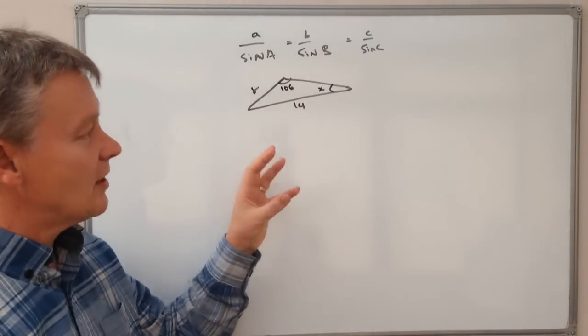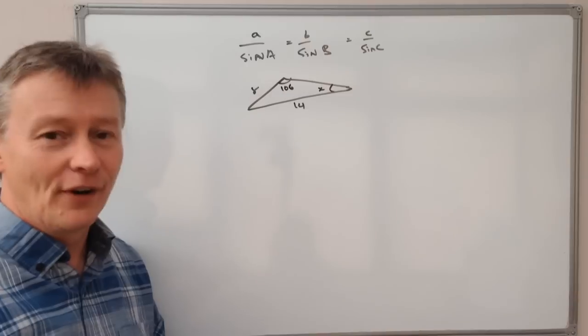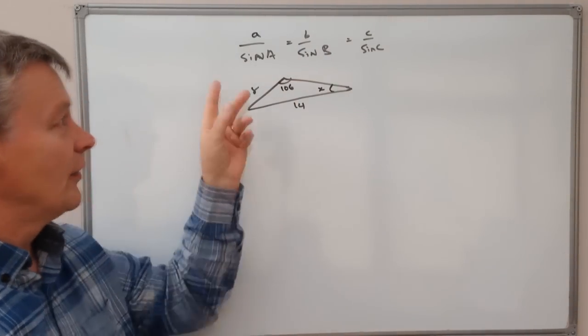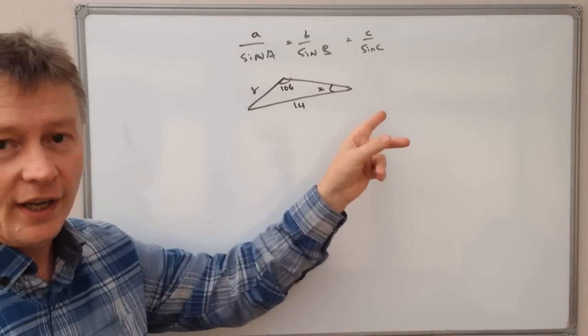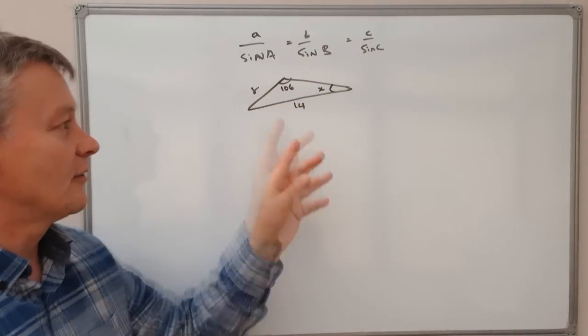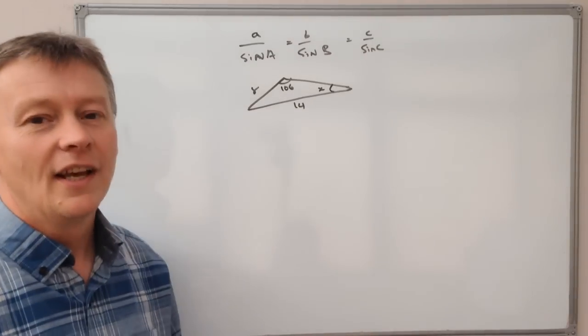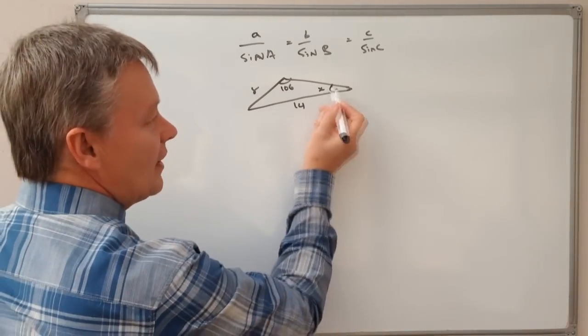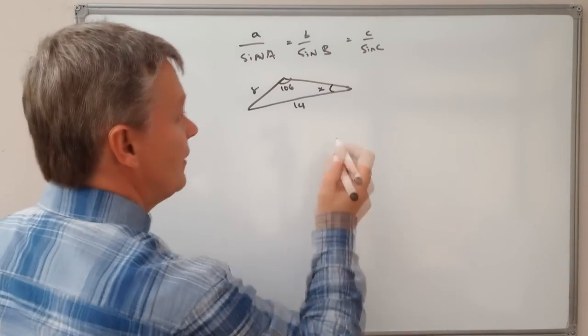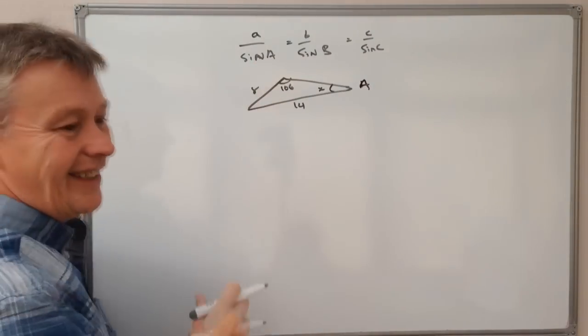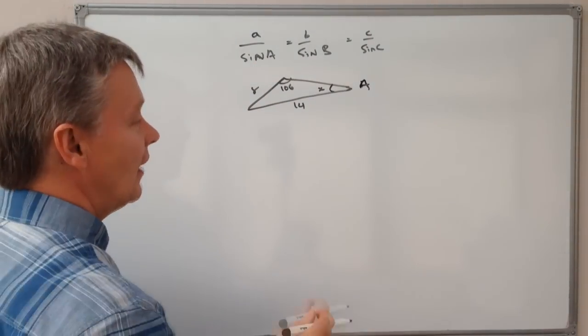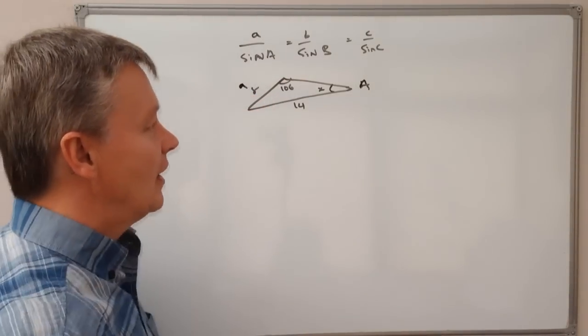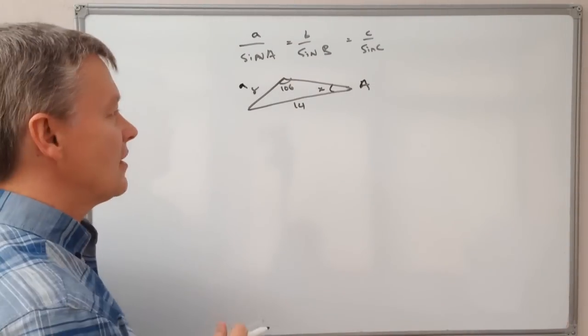So when you get something like that my strongest advice is to make sure that you relabel everything to ensure that you use it in this way. Because if you try to use X and 106 and 14 and 8 it can get a little bit confusing. So I'm going to call the bit I need to find out A. So it's actually sine A is the bit that I'm trying to find out. And opposite sine A is small a which is this 8 metres or 8 centimetres length.